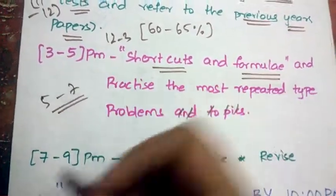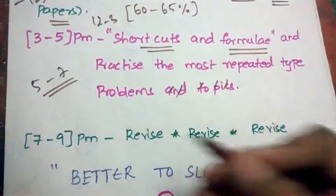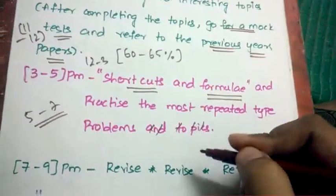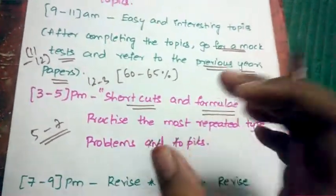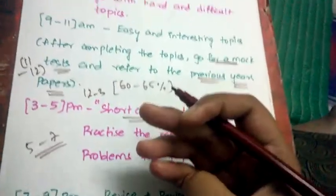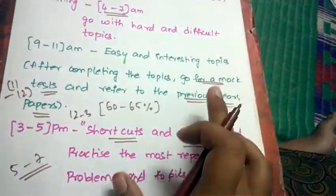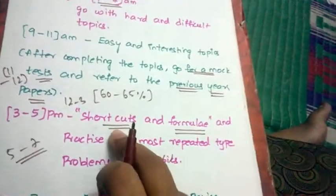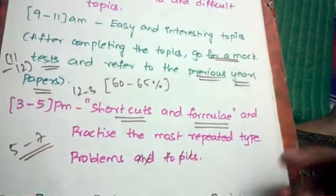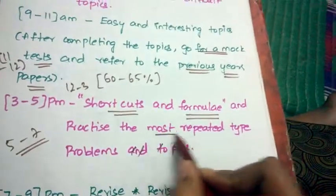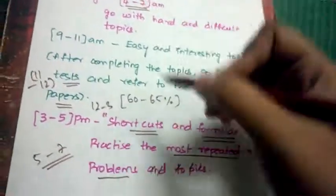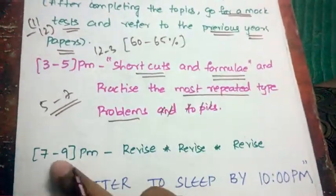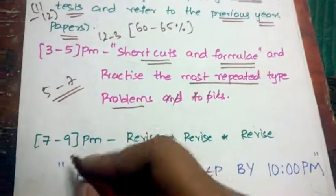5 to 7 is break time, so be back by 7. From 7 to 9, what you need to do is just revise the things which you studied from morning to evening. You have done a lot of things that day, right? You have studied the hard topics, you have studied the easy topics, you have written a mock test, you have referred to your previous papers, shortcuts, you have recollected formulas, and you have also practiced the most repeated type of problems. So it's not suggested to study more. 7 to 9, just revise the things.